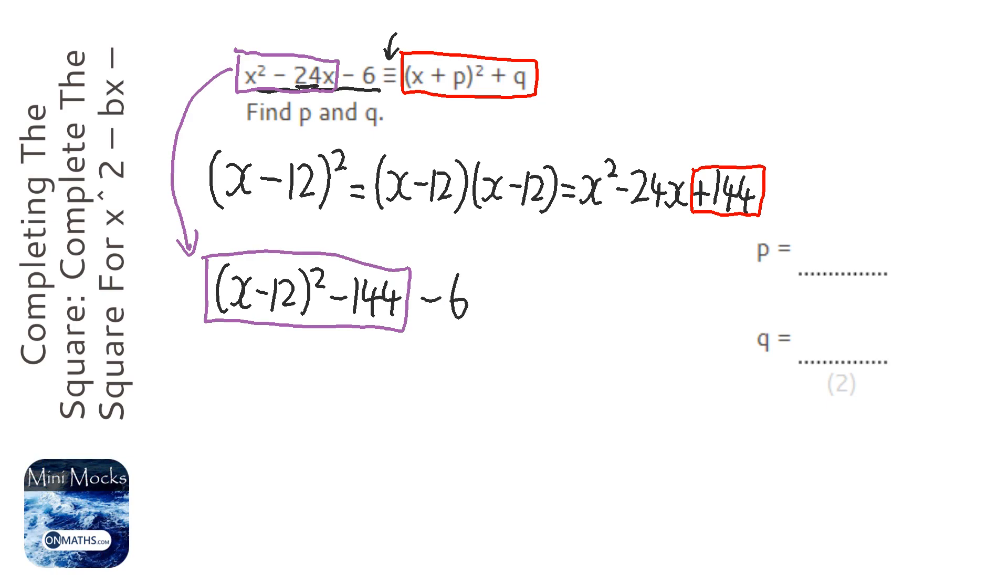And then we've got that minus 6 at the end. So the problem is that we are given the fact that we just have a q there. So we need to put the minus 144 and the 6 together. So it's going to be x minus 12 all squared, and then minus 150.